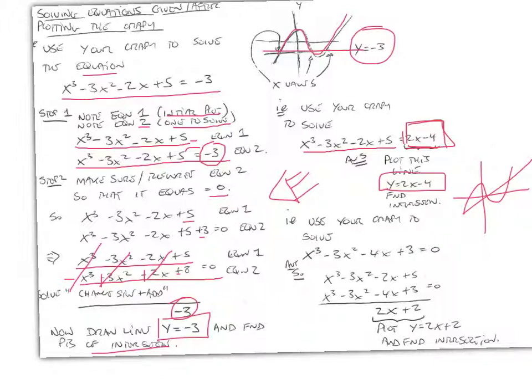If we're asked, use your graph to solve this equation here. We take our first equation. We take this one as our second. We write it underneath. And we take one from the other by changing the sign and adding. We get minus 2x plus 4x is 2x. 5 minus 3 is 2. And we plot y equals 2x plus 2 and find the intersection.